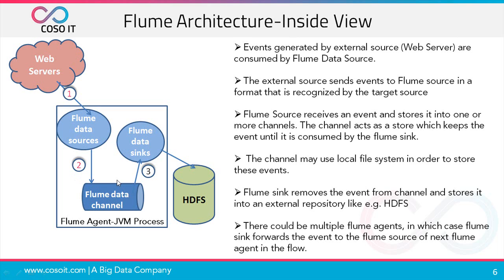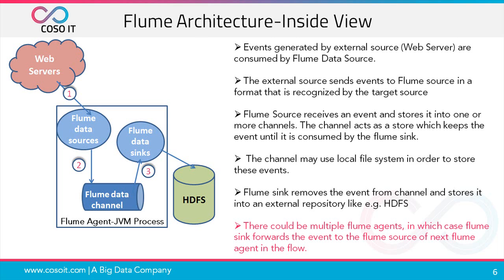The Flume agent is an independent daemon process — a kind of JVM — and is the simplest unit of Flume deployment. Each Flume agent has three components: the source, the channel, and the sink. The Flume source receives an event and stores it into one or more channels. The channel acts as a storehouse which keeps the events until they are consumed by the Flume sink. The channel may use the local file system to store these events. The Flume sink removes events from channels and stores them in an external repository such as HDFS, or forwards them to another Flume agent.